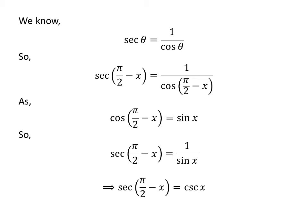We know 1 upon sine of x is equal to cosecant of x. So secant of half of pi minus x is equal to cosecant of x.